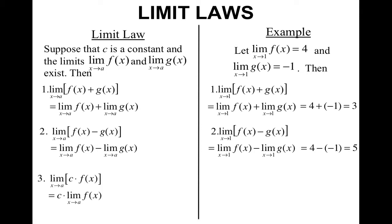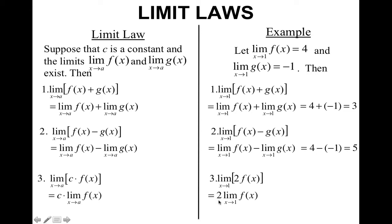The third limit law is the constant multiple law. If you have a constant multiplying a function, since the limit does not depend on that constant, you can factor it out, take the limit of the function, then multiply by the constant. So for example, if we had 2 times f of x as x approaches 1, I can factor out the 2 and substitute in 4, since that's what this limit is. And 2 times 4 gives me 8.